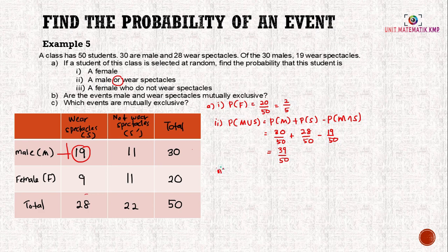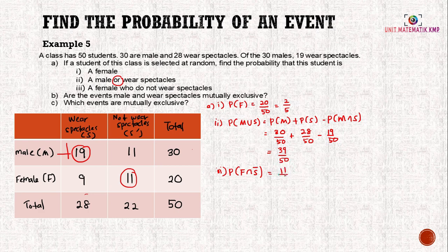The third question asks for the probability of a female who does not wear spectacles, i.e., P(F∩S̄). From the table, females not wearing spectacles = 11, so P(F∩S̄) = 11/50.